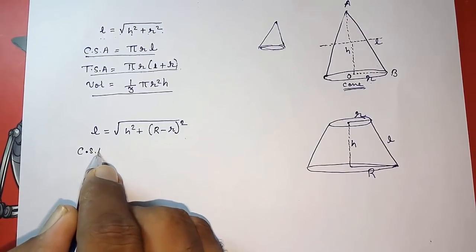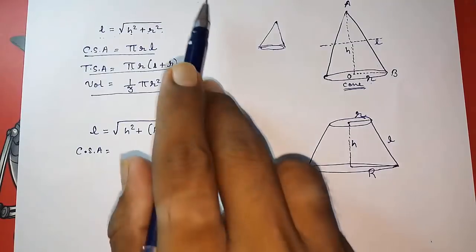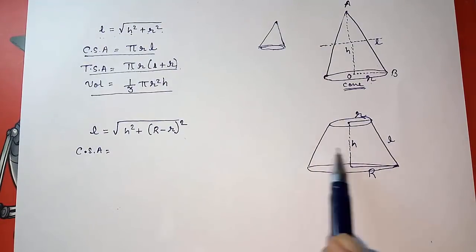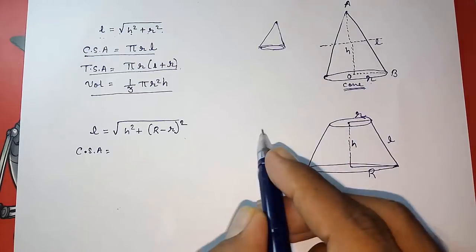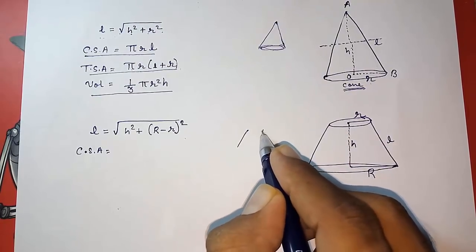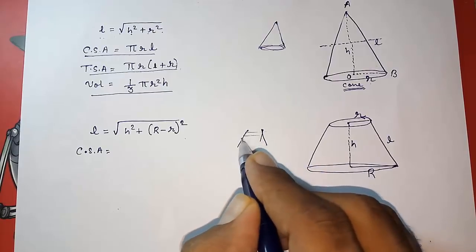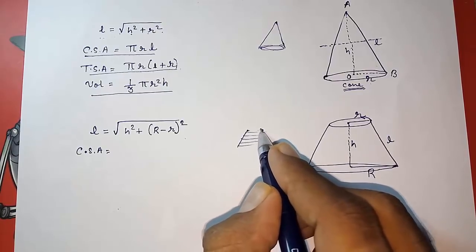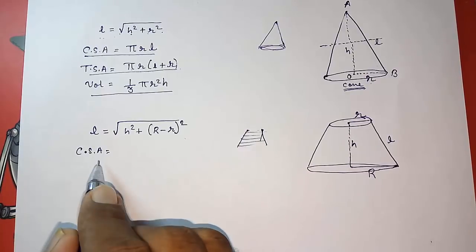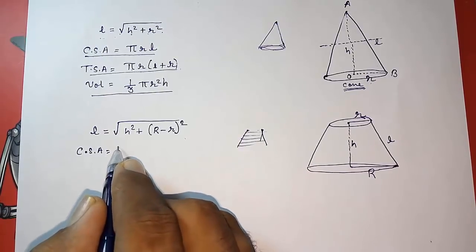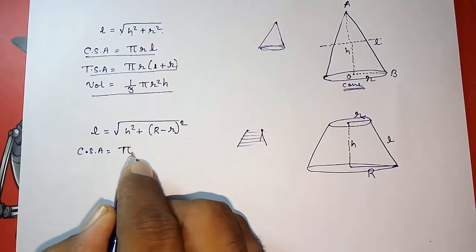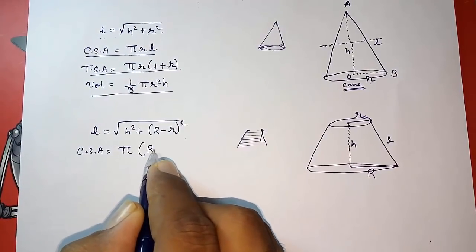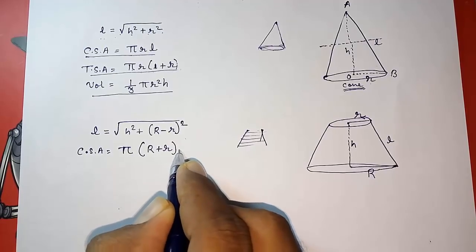Then curved surface area of frustum of cone means only this part, you have no upper part and no lower part, only the curve part. It is open from the top also and from the bottom. Here it was pi r l, but here we are having two r, so pi and capital R plus small r into L.